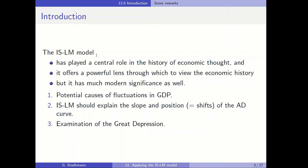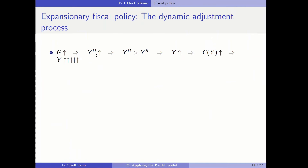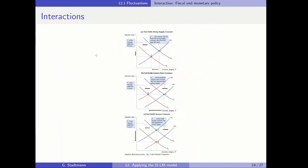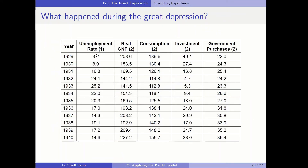Nevertheless, the subchapter starts with an empirical analysis of important macroeconomic variables over time. So in the first part of this table, you can see the unemployment rate. We can see here in 1929 almost full employment, and then from 1929 to 1930 the unemployment rate increased tremendously — by a factor of about 3.